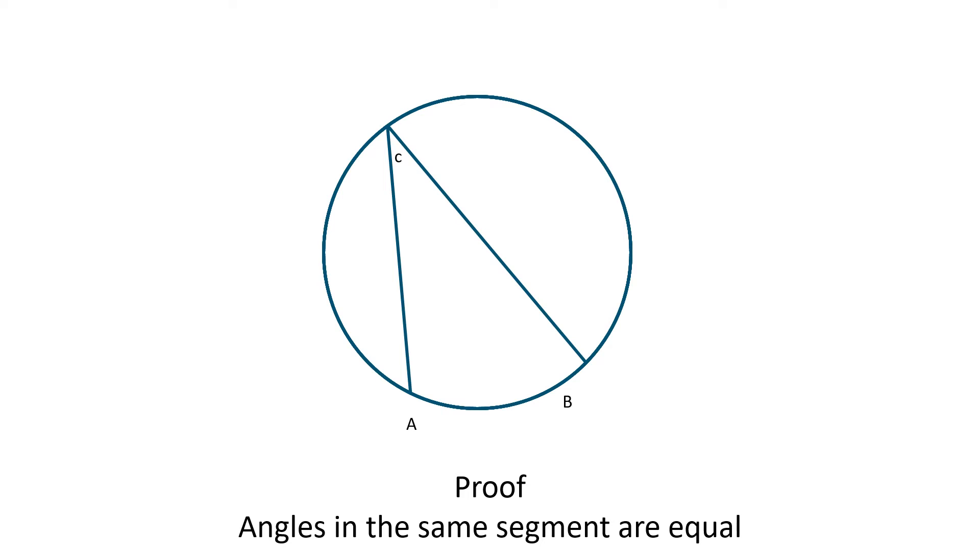The two angles C and D are made at the circumference from the points A and B. We made the angle at the centre from points A and B and call it E.